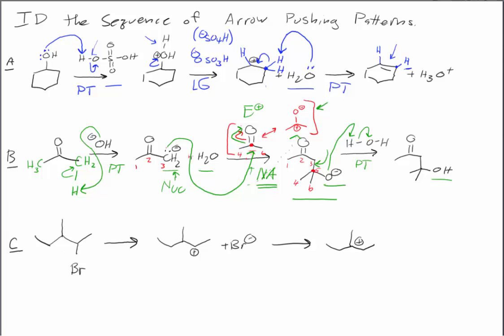All right, on to letter C. The first thing that we observe here is that the bromine has left. And so that's going to be classic loss of leaving group, leaving behind a cation and a bromide.